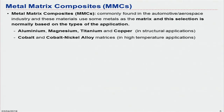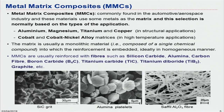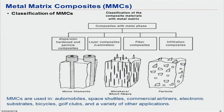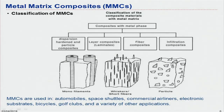In high temperature applications — not as good as ceramics — but cobalt and cobalt-nickel alloys can be used. Some examples of possible short or long fibre reinforcements: for metal matrix composites we mostly use short fibres and particles. Long fibres are possible, but the most popular are short fibres or particle reinforcements. We can discuss them in four different categories based on reinforcement: monofilaments or long fibres, whiskers or short fibres, particles, and also wires.